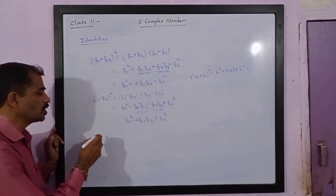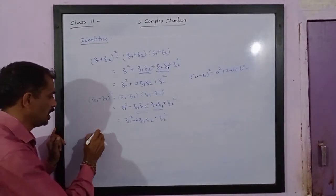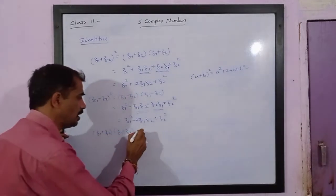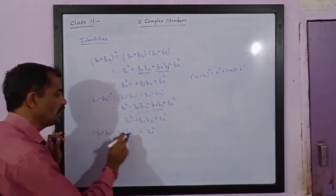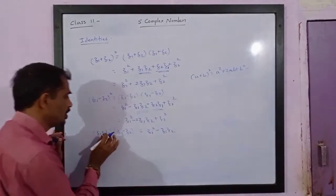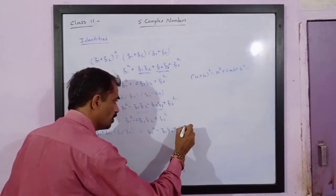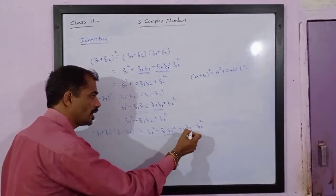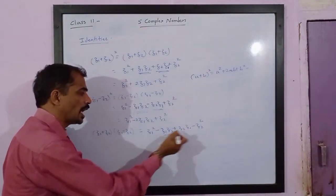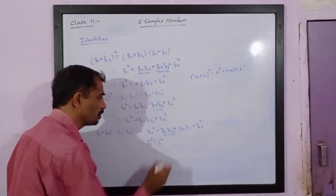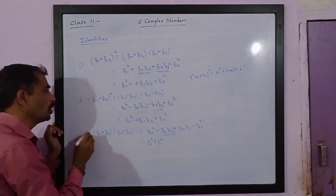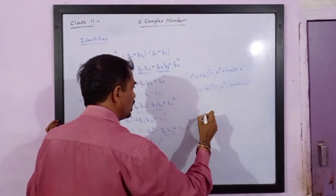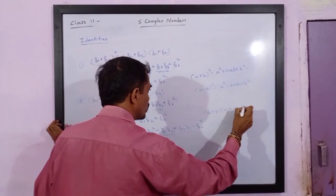The next identity is z1² - z2², or equivalently (z1 + z2)(z1 - z2). Multiplying out: z1² - z1z2 + z2z1 - z2². Since z1z2 = z2z1, these terms cancel each other, and we are left with z1² - z2². The second identity is (a - b)² = a² - 2ab + b², and the third identity is (a + b)(a - b) = a² - b².